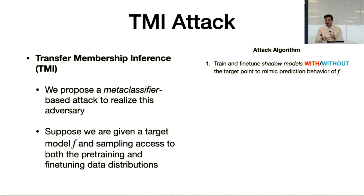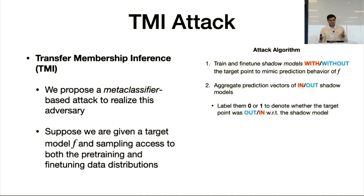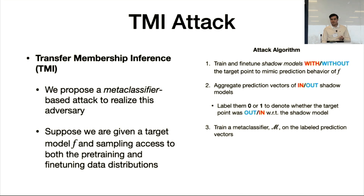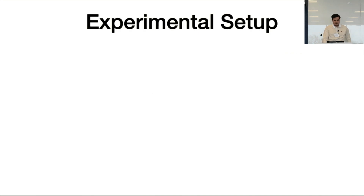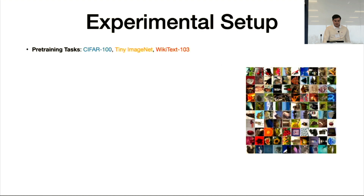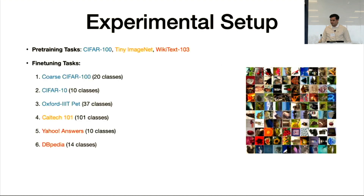To realize this adversary, we create an attack called Transfer Membership Inference — TMI — which is a meta-classifier-based attack. Given a target model F and sampling access to pre-training and fine-tuning data distributions, we train and fine-tune shadow models that either do or do not contain the target point. We aggregate prediction vectors from queries on these shadow models, label them zero or one to denote in or out, train a meta-classifier on these labeled vectors, then query F to classify the result.